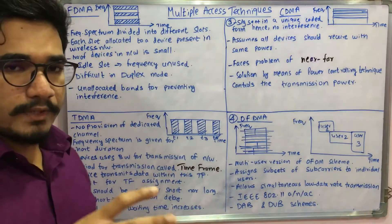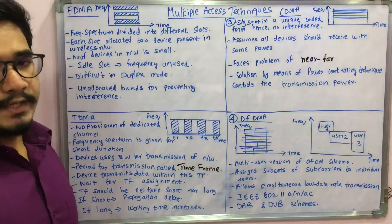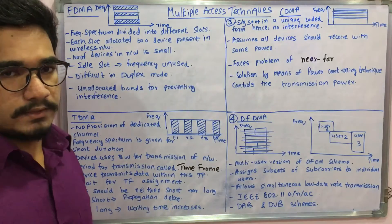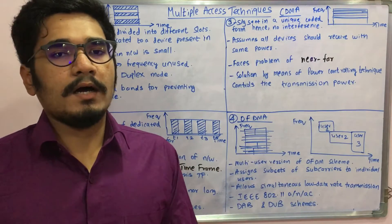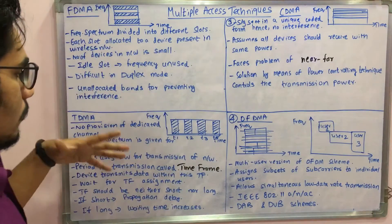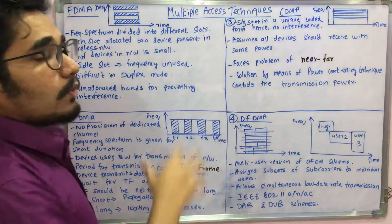That kind of problem is there if you assign the time frame for a short duration. If it's long, then the waiting time obviously increases for the devices in the queue, so they may be waiting in the queue and seeing when their turn would be coming. In order to overcome this, we have code division multiple access, CDMA.